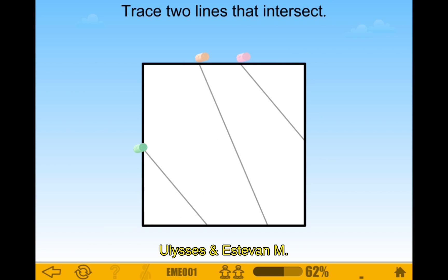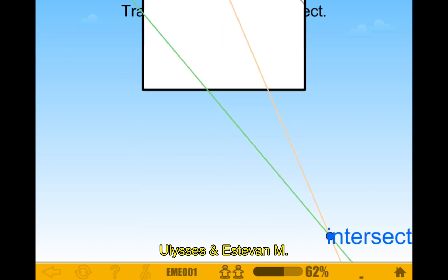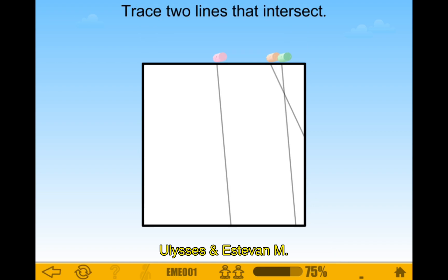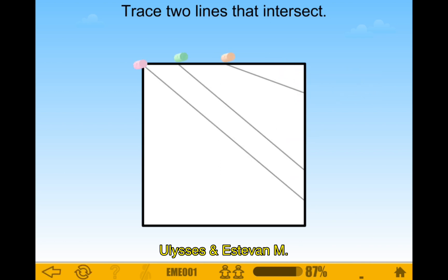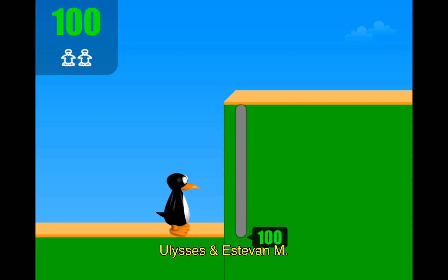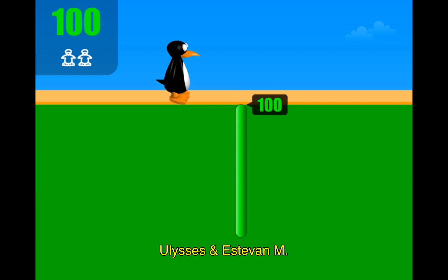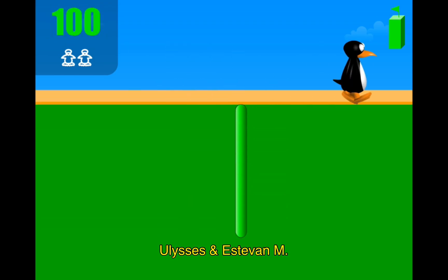Trace two lines that intersect. And there — that intersects like way after. Two lines that intersect — obviously these ones intersect. Trace two lines that intersect. There we go. And that was simple. It was really, really easy.